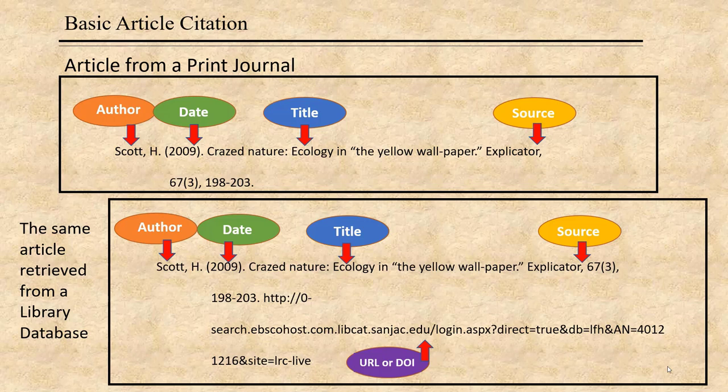Then the title of the article in regular font, with the first word of the title, the first word of the subtitle, and any proper nouns as the only words capitalized, followed by a period. Then the source information. In the case of an article from a print journal, that is the journal name, followed by a comma, then the journal edition number with the issue number in parentheses, followed by a comma, then the page numbers of the article in the journal, followed by a period.